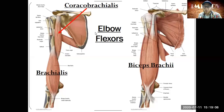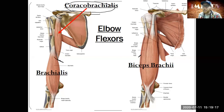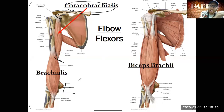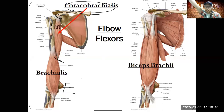One last muscle here is the coracobrachialis, coming from the coracoid process down to the humerus. It's smaller and does not cross the elbow joint — a muscle must cross a joint to have an action on it. The coracobrachialis crosses the glenohumeral joint, so its action is shoulder flexion — a very weak shoulder flexion.